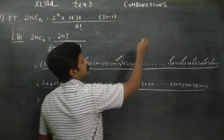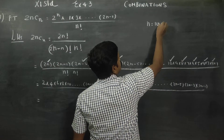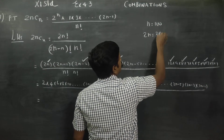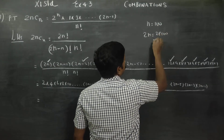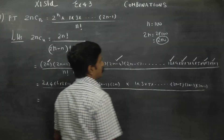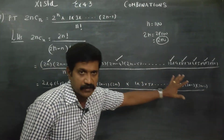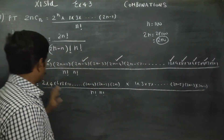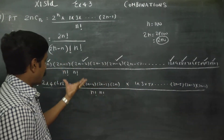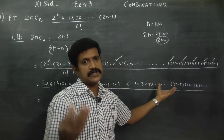For example, if n is equal to 100, then 2n is equal to 2 into 100, so there are 200 terms total. Out of 200 terms, 100 terms are even and 100 terms are odd.